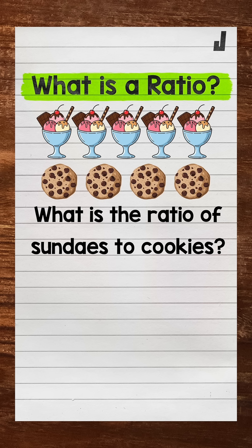Let's jump into our example. We're going to say that a restaurant sold five sundaes for dessert and four cookies for dessert one night. What is the ratio of sundaes to cookies?